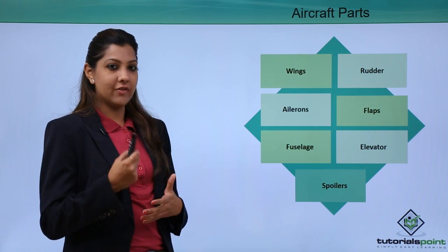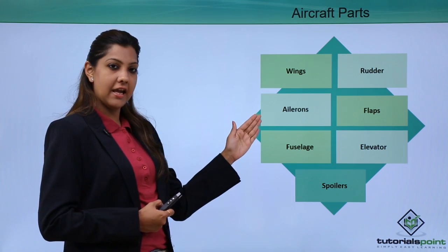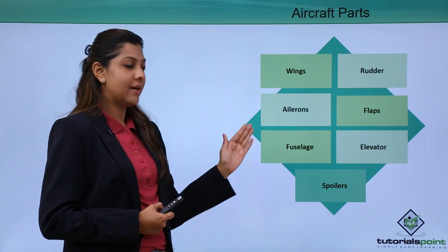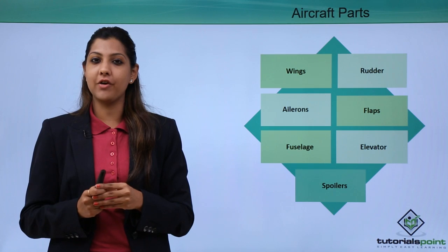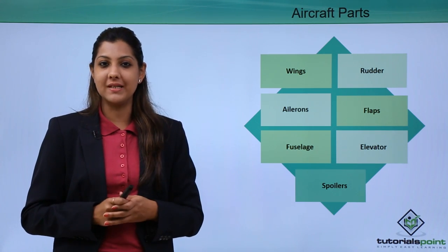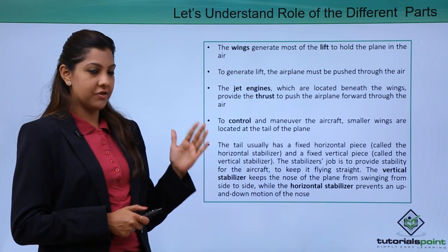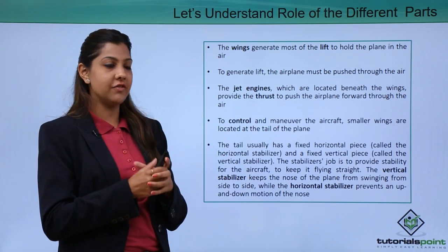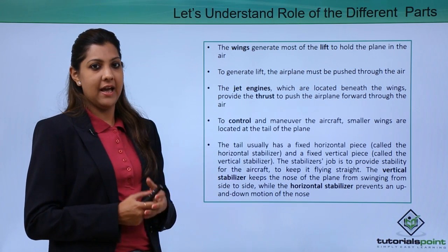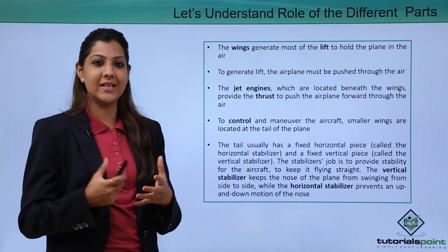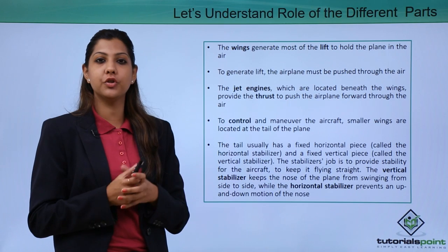In detail, we'll cover the wings, rudder, ailerons, flaps, fuselage, elevator, and spoilers — all of which help the aircraft in forward, backward, and side movements. The wings of the aircraft generate most of the lift to hold the airplane in the air. To generate lift, the airplane must be pushed through the air at sufficient speed — which is why a full takeoff roll is required before lifting off.